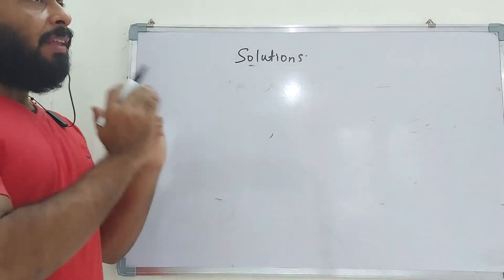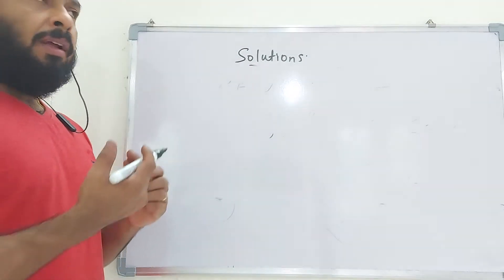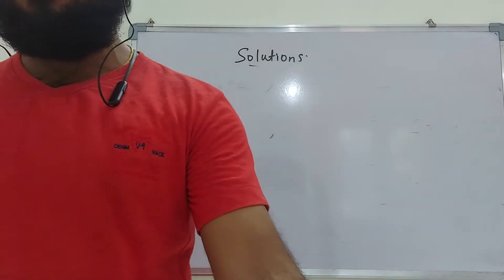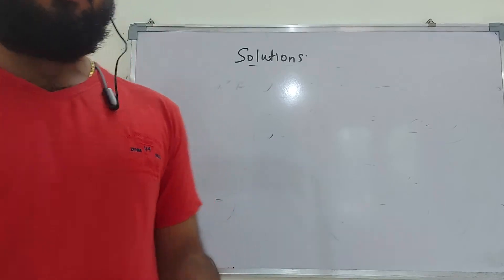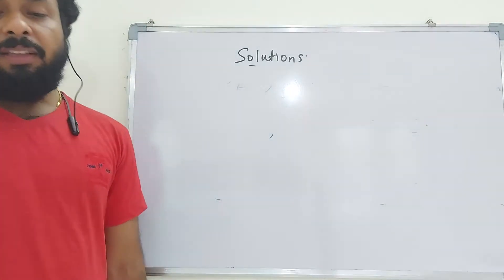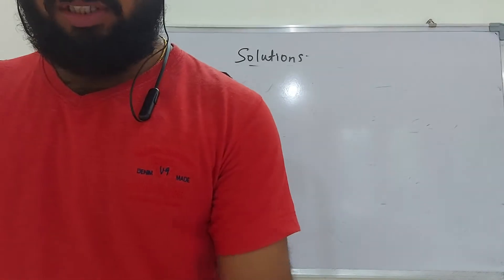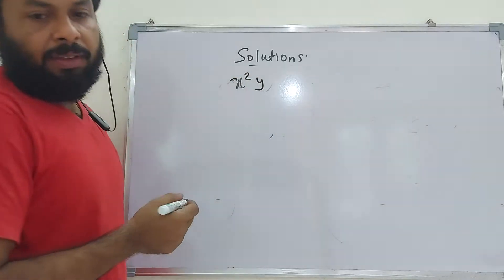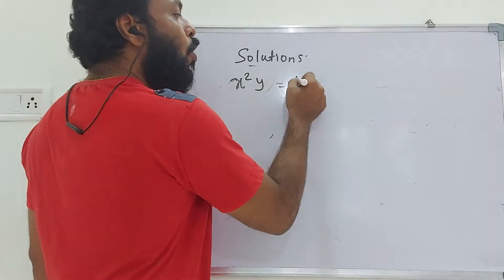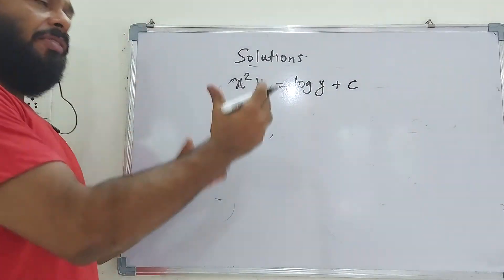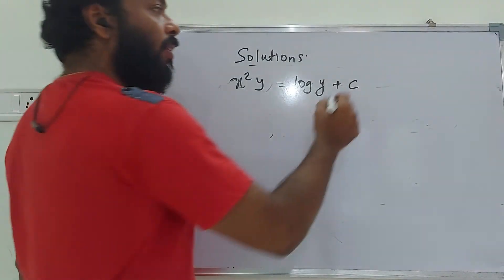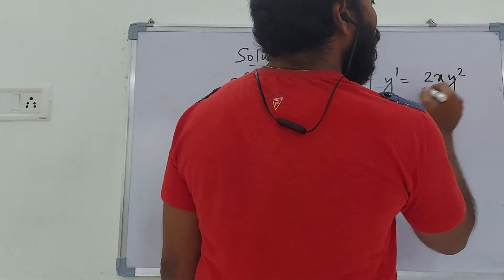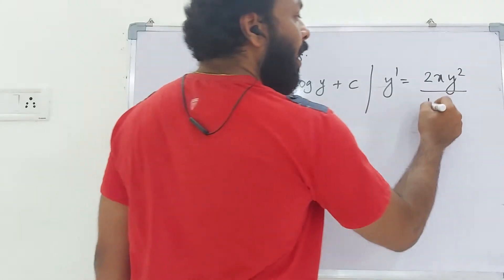To verify a solution, differentiate the given relation, find y', and substitute into the differential equation to check if it is satisfied. Consider the relation x²y = log y + c. Check whether it is a solution of the differential equation y' = 2xy² / (1 - x²y).